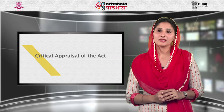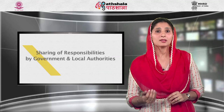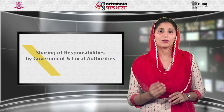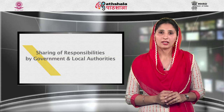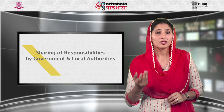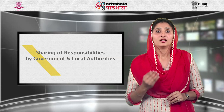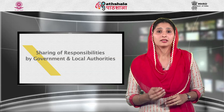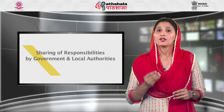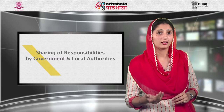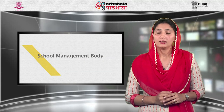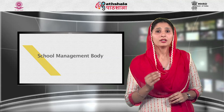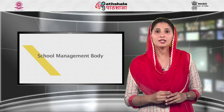Now we will discuss the critical appraisal of the Punjab Act. First, sharing of responsibilities by government and local authority: Section 7 provides for sharing of financial and other responsibilities by the government and local authority, but does not specify any clear strategy for such allocation. Section 8 rests responsibility of establishment of new schools on the shoulders of the local authority. It is not clear what percentage of share the provincial government will bear and what will be the mechanism of that sharing. Second, school management body: Section 11 provides for establishment of a school management body (SMB), but does not clearly specify who will form it — provincial government or local authority — nor its composition, roles and responsibilities, who will chair it, or how it will be run.